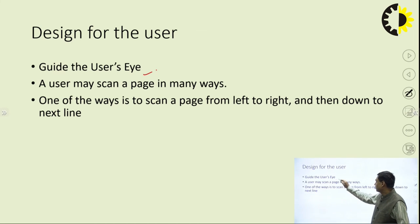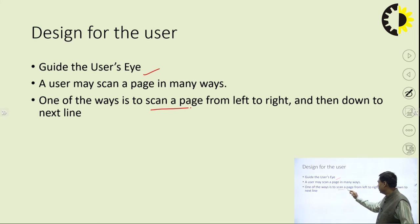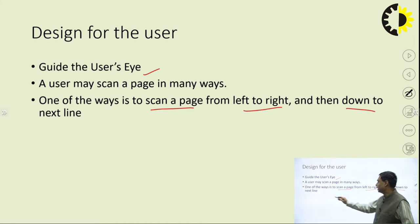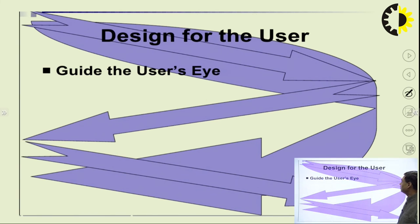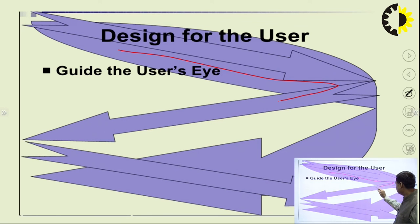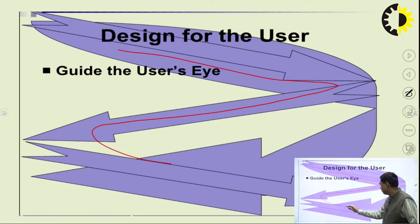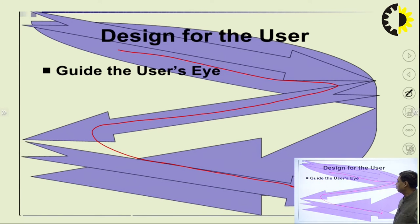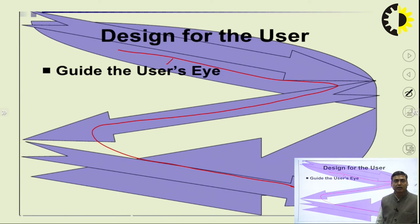Users basically scan the page rather than read it, and the scanning pattern is from left to right, then down to the next line. This is the approach — the user starts from left to right, then goes down to the next line, then again left to right. Accordingly, you should put the content in the area that the user is likely to see again and again, so the user can easily understand your website and stay there.